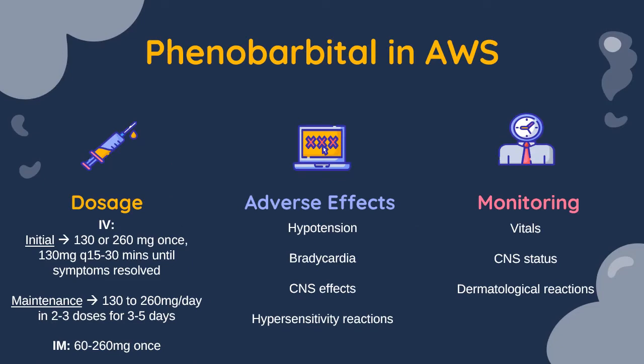Getting into how phenobarbital works in AWS — the dosage for alcohol withdrawal: the initial dose is 130 or 260 milligrams once, then 130 milligrams every 15 to 30 minutes until symptoms resolve for an acute situation. For maintenance taper, it's 130 to 260 milligrams per day in two to three doses for three to five days, tapering off by 10% each day. Duration and dosage depend on how the patient presents.